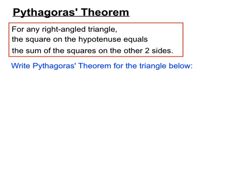We are sometimes asked to write Pythagoras' Theorem for various triangles. In this one you'll notice the M is on the hypotenuse, so we'll start with that. M squared equals N squared plus P squared.